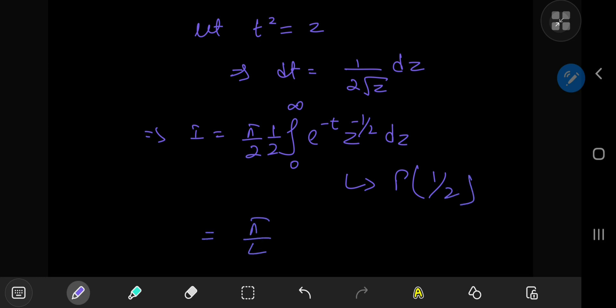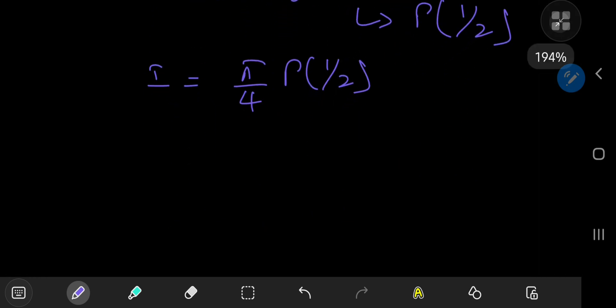Now I know what you're thinking, wait, don't we need the value of the Gaussian integral itself to figure out gamma 1 by 2? Well, that's not exactly the case.